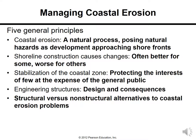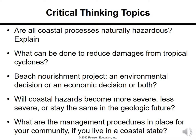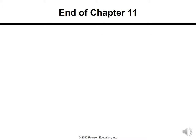There are five general principles covering coastal erosion: shoreline construction causes changes and stabilization of the coastal zone, and engineering structures and structural versus non-structural alternatives to coastal erosion problems. These are the major principles to read through and understand. There are also critical thinking topics to help understand the chapter well.